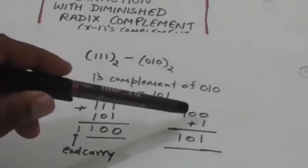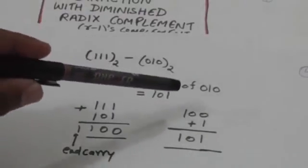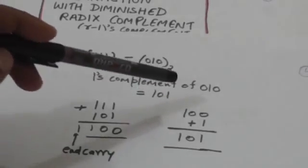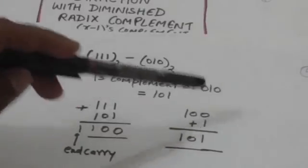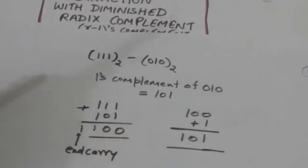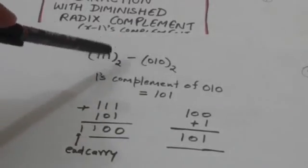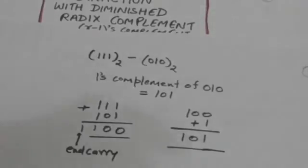When we add 1 to the least significant digit of 100, the result is 101. So when we subtract 010 from 111, the result is 101.